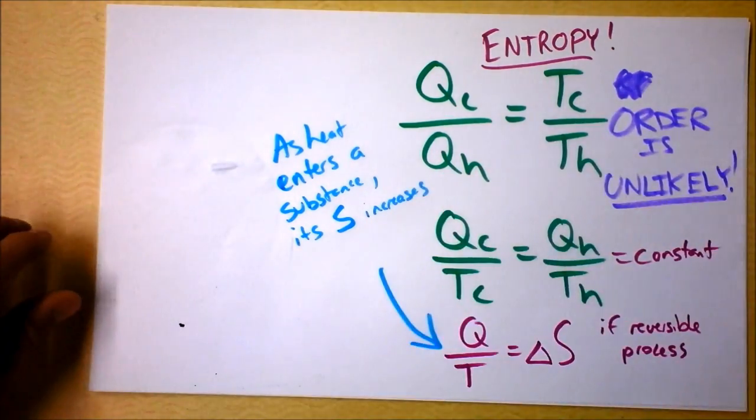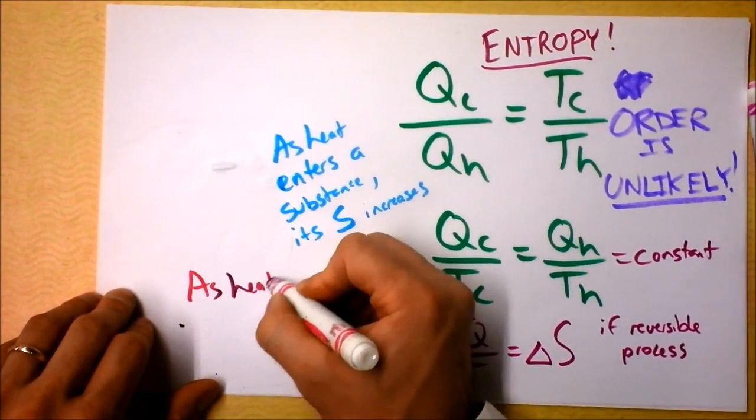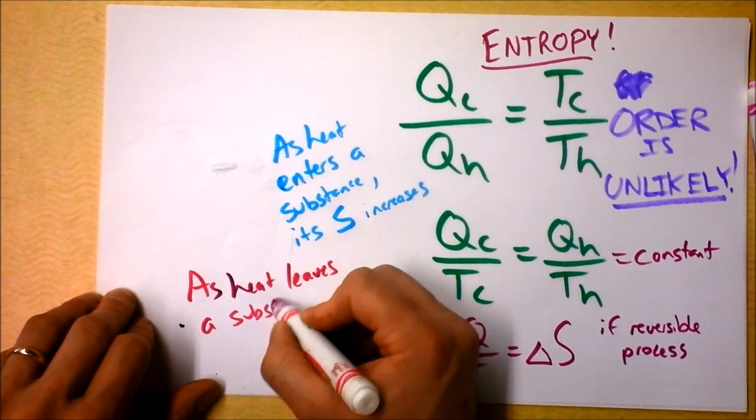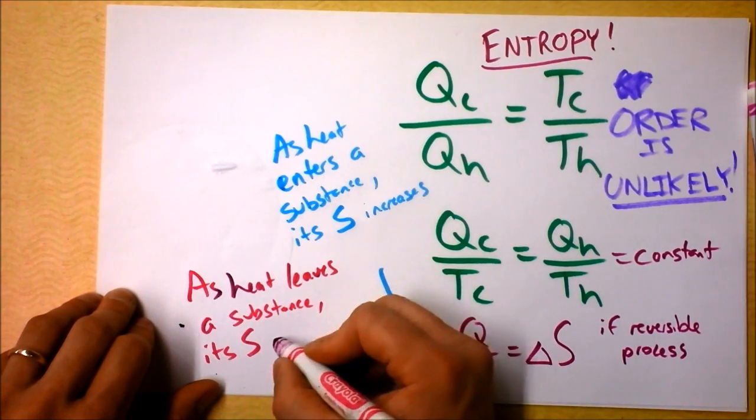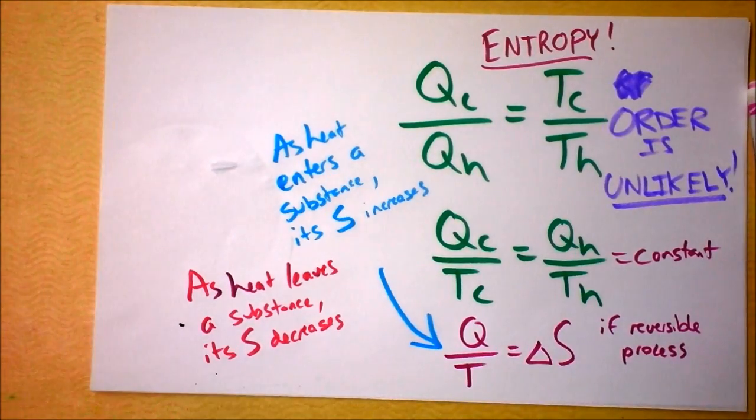And we could also say that as heat leaves a substance, its entropy decreases. Because all we need is Q to be negative and we'll have entropy going down.